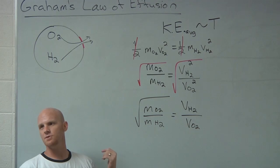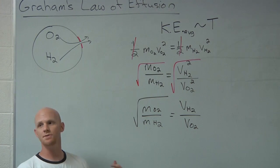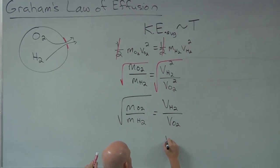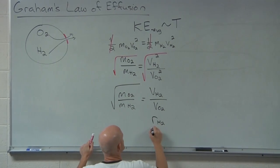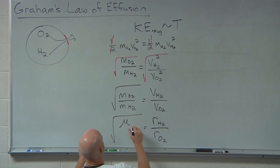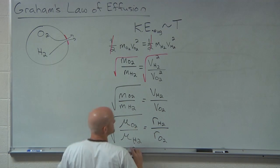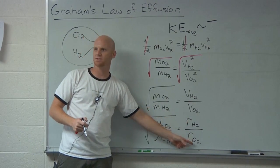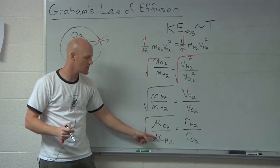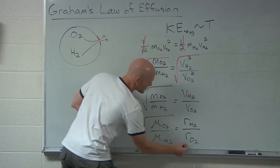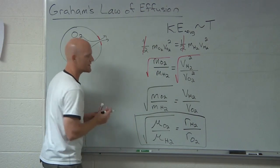And this is kind of where Graham's law of effusion is derived from. It turns out the rate of effusion is proportional to the velocity. And so Graham's law of effusion says that the rate of effusion for H2 divided by the rate of effusion for O2 is equal to the square root of the molar mass of O2 over the molar mass of H2. Notice it's rate of one gas over rate of a second gas, but it's molar mass of the second gas over the molar mass of the first gas.